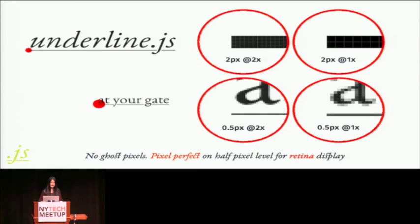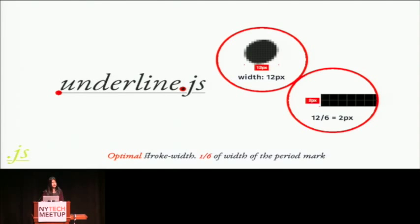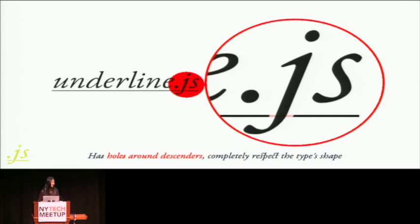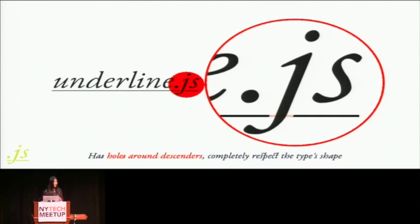The render of UnderlineJS doesn't have any ghost pixels. It's not just pixel perfect — it's pixel perfect on a half-pixel level for retina displays. It has an optimal stroke width calculated based on the font: one-sixth of the width of the period mark. It sits at an optimal Y position between the text baseline and the descender line, and that optimal Y position turns out to be the golden ratio point. The size of the holes around descenders are also optimized to perfection.